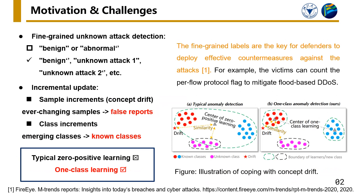Nevertheless, these methods cannot obtain fine-grained labels — for example, benign unknown, attack 1, and attack 2. In this way, defenders can deploy effective countermeasures against attacks better.